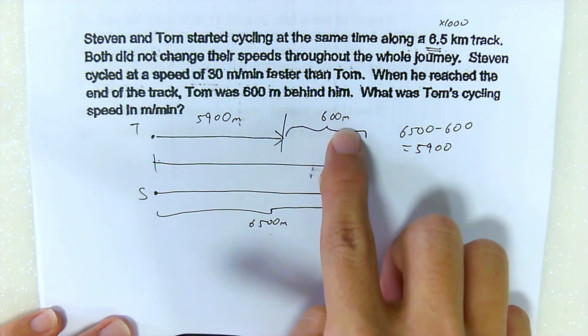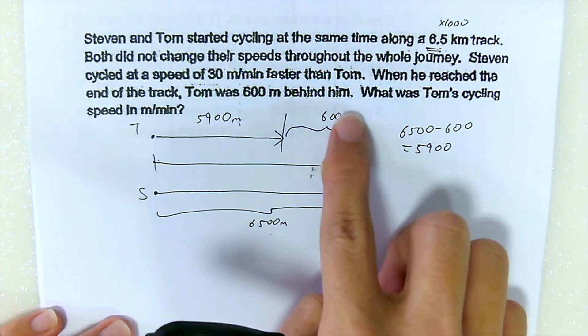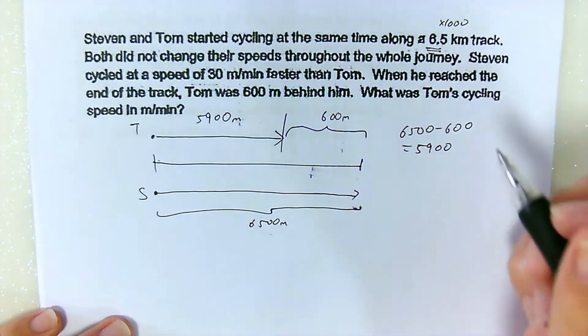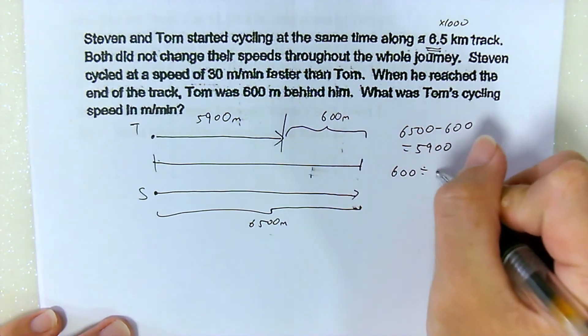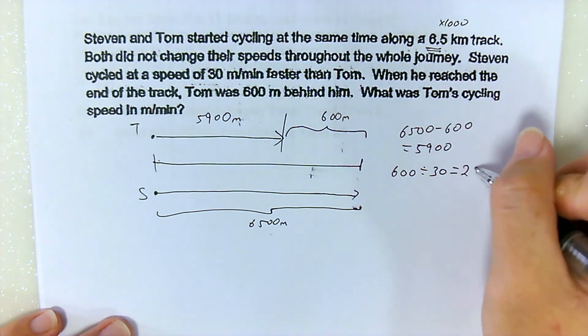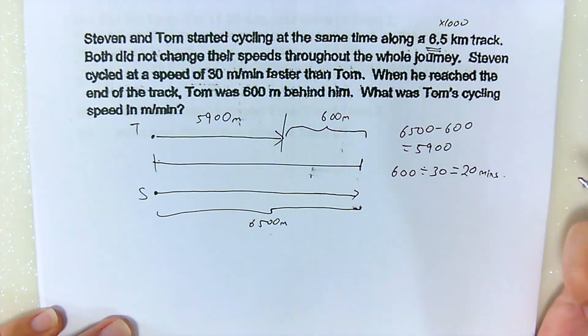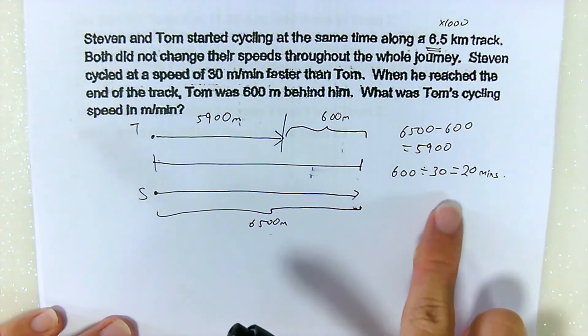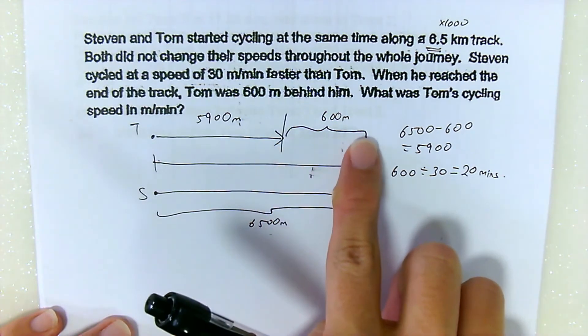Now at the end, he traveled 600 meters more than Tom. The question is, how long did he take to travel 600 meters more than Tom? We just take 600 divided by 30. This will give us 20 minutes.